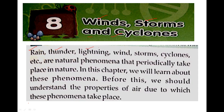Rain, thunder, lightning, wind, storms, cyclones — these are all natural phenomena and natural processes that periodically take place. Periodically means that there are some time intervals, or some particular time. If you study them, there is a particular pattern which depends on all the things. These are phenomena that periodically take place in nature.